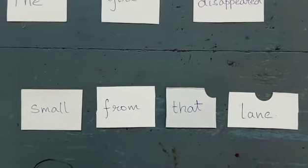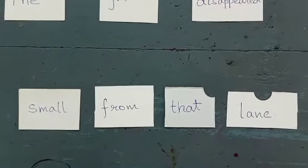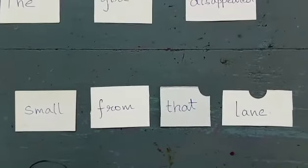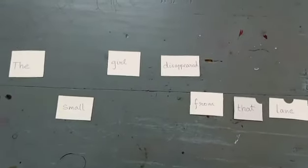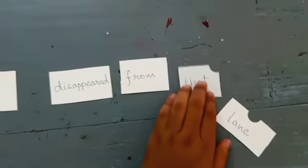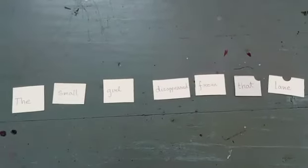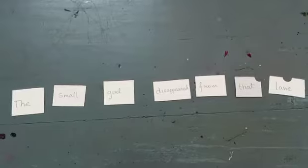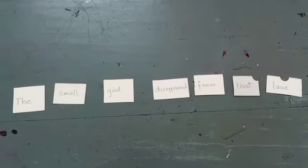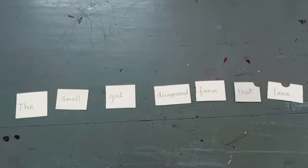I have prepared some more flashcards and I have written 'small' and 'from that lane.' So now we will add these flashcards and expand the sentence 'The girl disappeared.' Let's join the sentences: 'The small girl disappeared from that lane.' As you can see, I have expanded the sentence with 'small' and 'from that lane,' and the sentence becomes 'The small girl disappeared from that lane.'